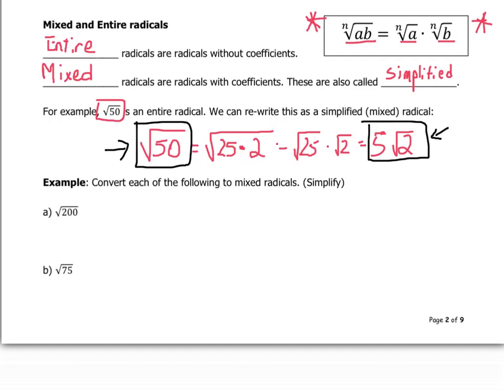Here are some questions — we want to convert each of the following to mixed radicals, that is, simplify them. Pause the video and try the first two. For the square root of 200: 200 can be broken into 100 times 2, giving square root of 100 times the square root of 2, which is 10 times the square root of 2.